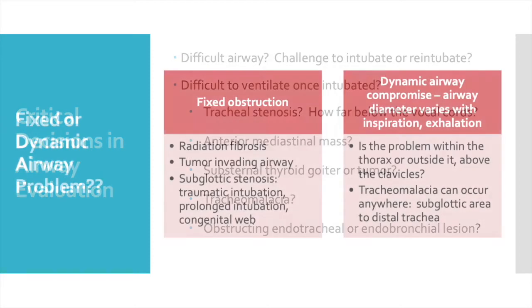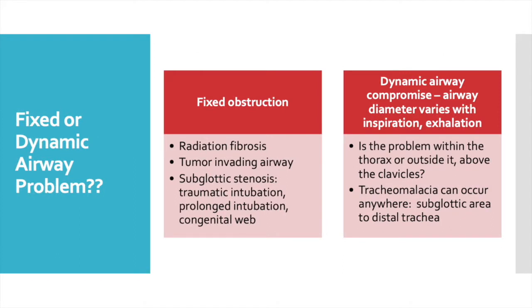A good way to formulate our decision making is this: ask yourself if you're dealing with a fixed airway problem or a dynamic airway problem. Fixed obstructions may result from conditions like radiation fibrosis, tumor invading the airway, or subglottic stenosis. Airway stenosis can occur after a traumatic intubation, prolonged intubation, or after lung transplant. Subglottic stenosis can also be the result of a congenital web.